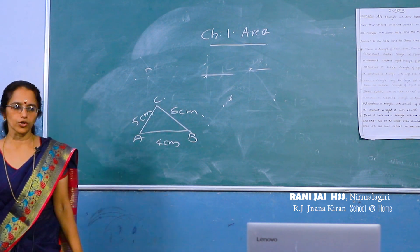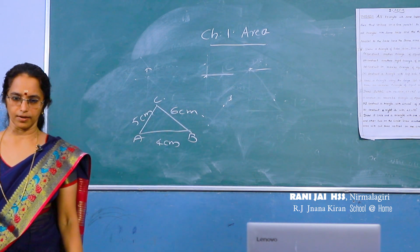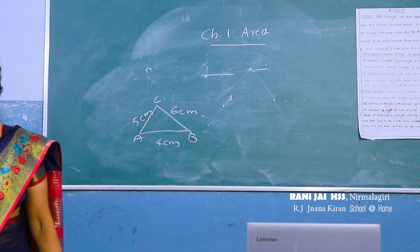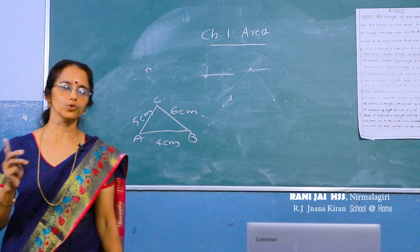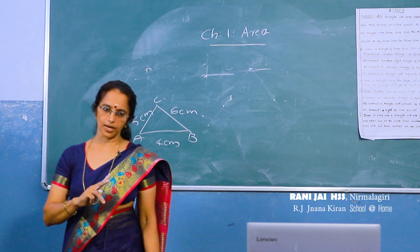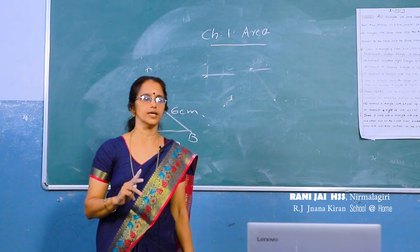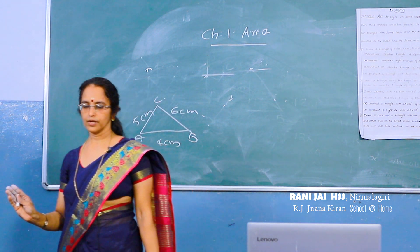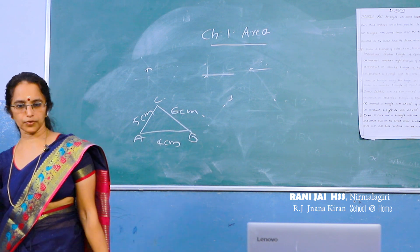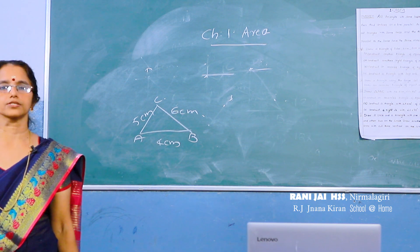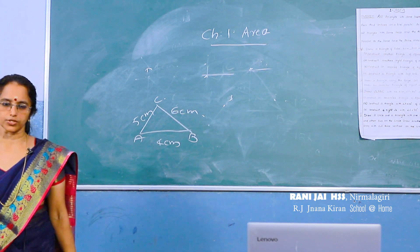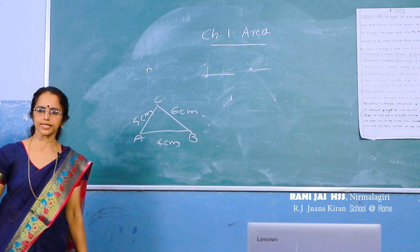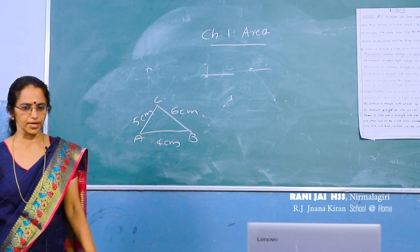What is an isosceles triangle, children? If two sides of a triangle are equal, that triangle is called an isosceles triangle. You already studied this in a previous standard.